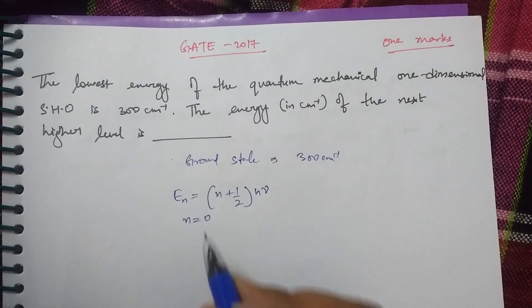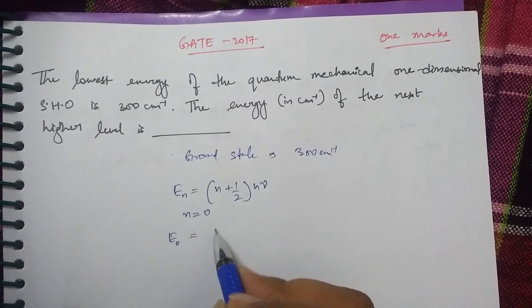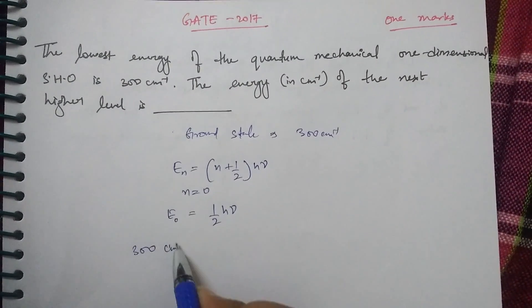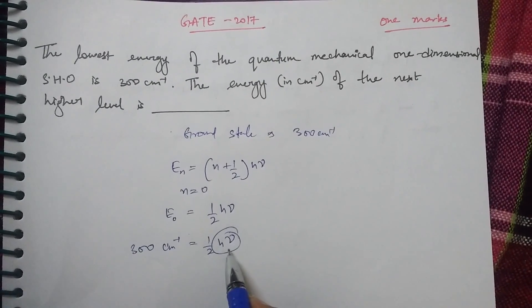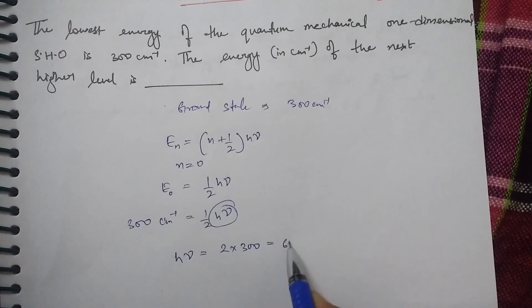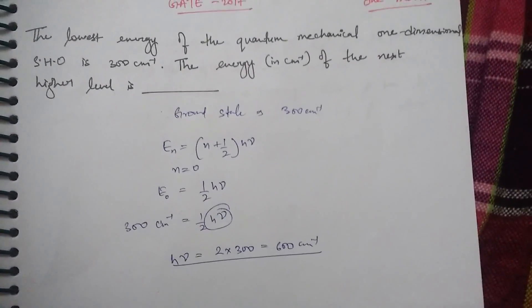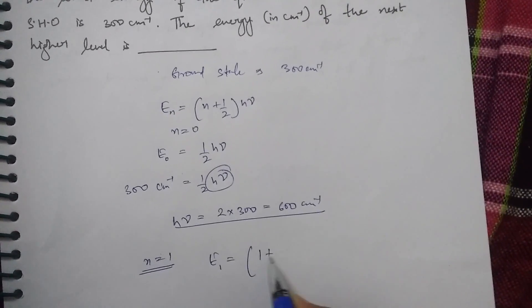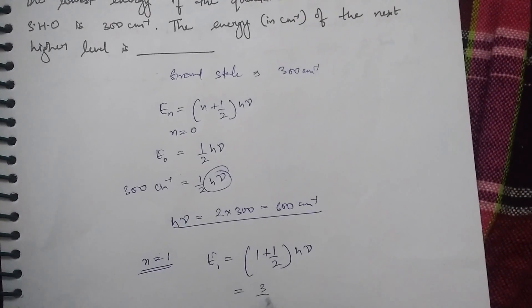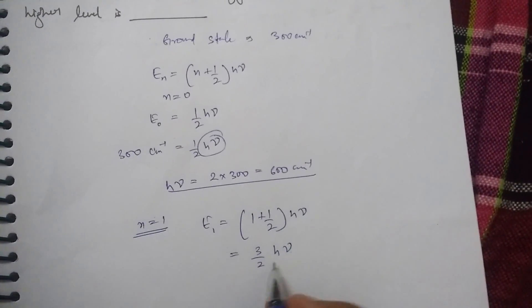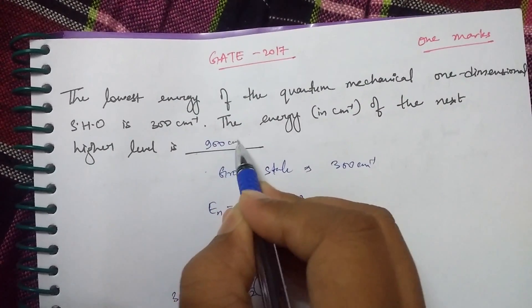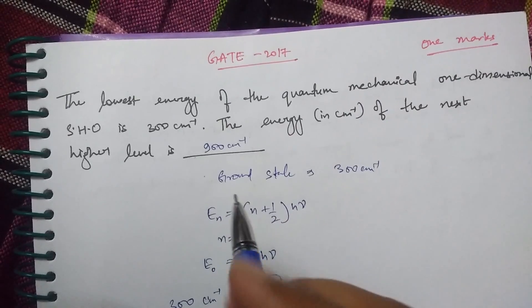For the ground state, n = 0, so E₀ = ½hν = 300 cm⁻¹. Therefore hν = 600 cm⁻¹. For the next energy level, n = 1, E₁ = (1 + ½)hν = (3/2)hν = (3/2) × 600 = 900 cm⁻¹. The correct answer for this question is 900 cm⁻¹.